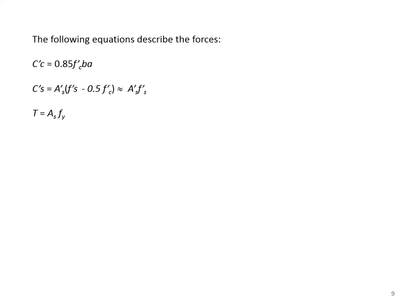The following equations describe the forces. C'_c is 0.85 f'_c × B × a. C'_s is A'_s × f'_s, and T equals A_s × f_y. Also, f'_s is equal to epsilon'_s times E_s. F'_s is the compressive stress on the compression steel; it equals 87,000 psi times (x minus d') divided by x. However, the value cannot exceed f_y.